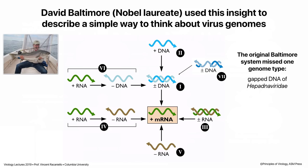Putting viruses into seven groups was done by a virologist named David Baltimore. He won a Nobel Prize in the 70s for discovering an enzyme we'll discuss later. Before that, he was thinking about how viruses replicate and reasoned that if all viruses must make mRNA compatible with host ribosomes, he could map out how every virus gets to that point. He found six different categories — he missed the seventh because those viruses weren't known yet. This is called the Baltimore classification: mRNA is placed in the middle, and you trace how each of the seven genome types reaches mRNA.